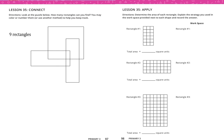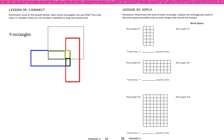Lesson 35: Look at the puzzle — how many rectangles can you find? Let's identify them by color: blue, red, green, baby blue, yellow, black, gray, brown, and light blue. Total rectangles: nine.